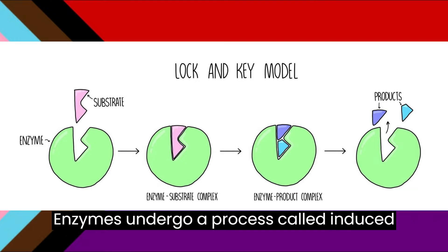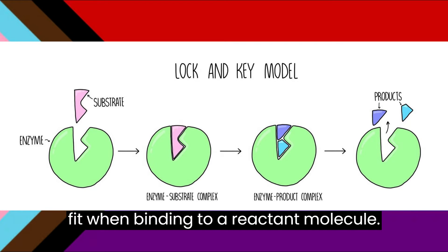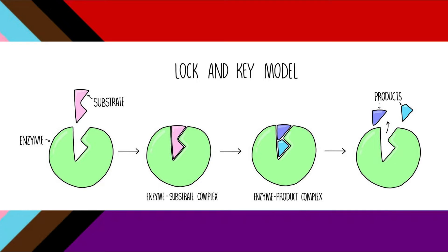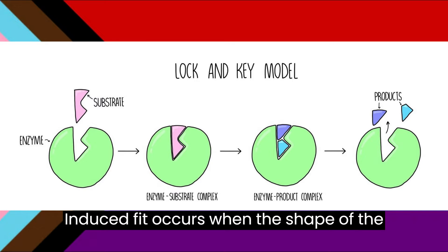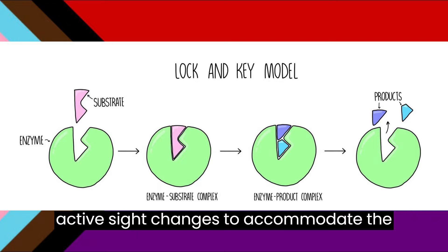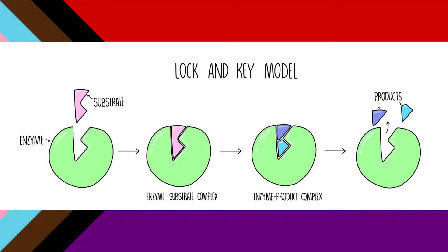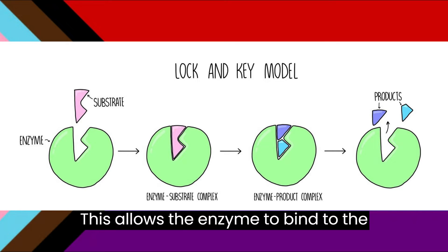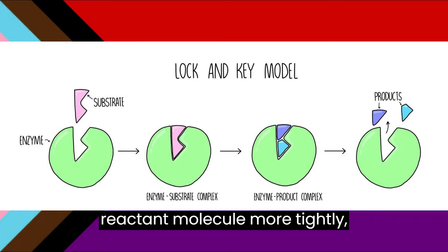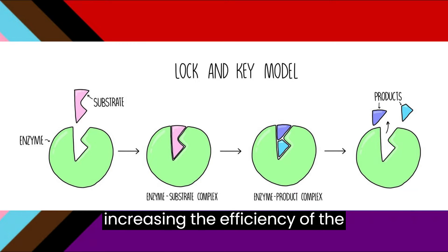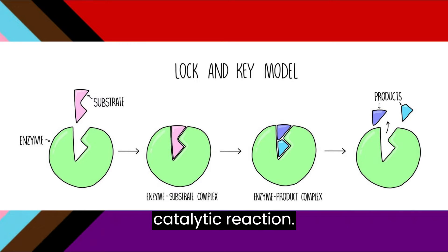Enzymes undergo a process called induced fit when binding to a reactant molecule. Induced fit occurs when the shape of the active site changes to accommodate the shape of the reactant molecule. This allows the enzyme to bind to the reactant molecule more tightly, increasing the efficiency of the catalytic reaction.